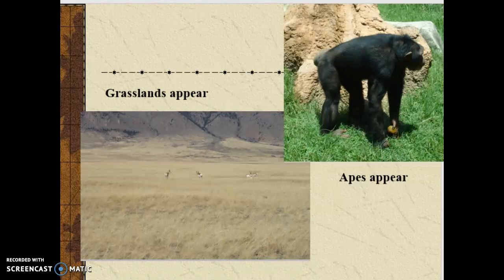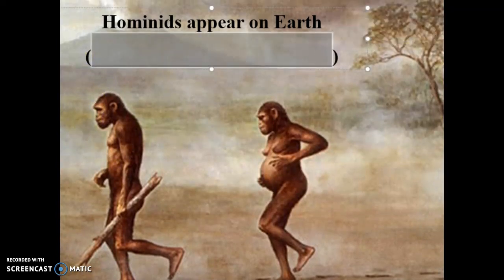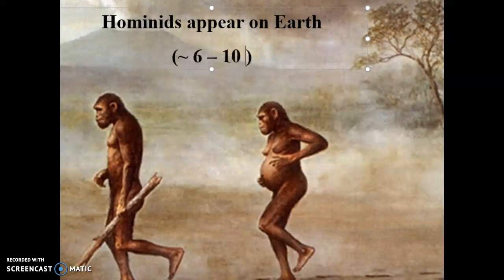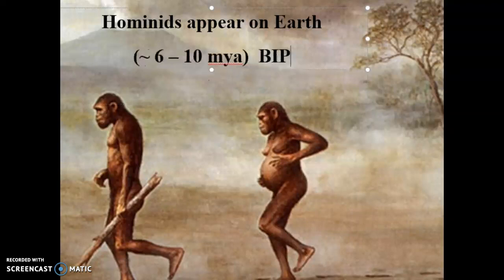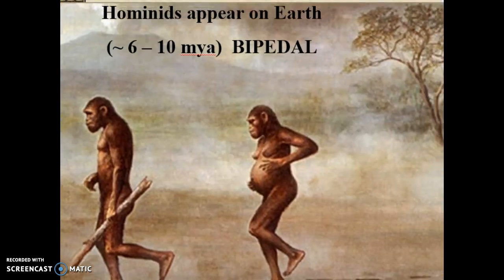As apes continue to evolve and adapt, they eventually give rise to a group called hominids. Hominids show up on Earth around 6 to 10 million years ago. The key feature of a hominid is being a mammal that is a primate that walks on two legs — bipedal. Gorillas and chimps are not bipedal; they went down a different evolutionary branch. All of our hominid ancestors are bipedal primates — bipedal apes, if you want to call it that.